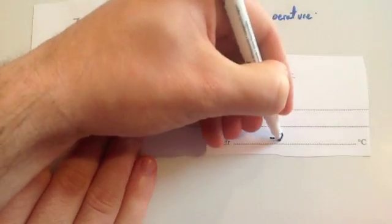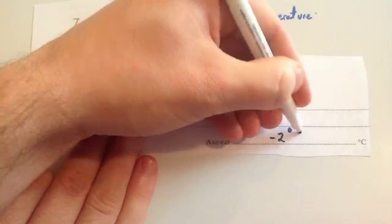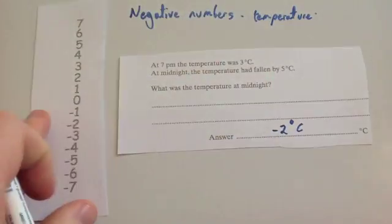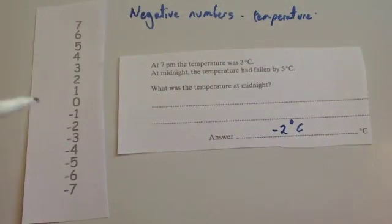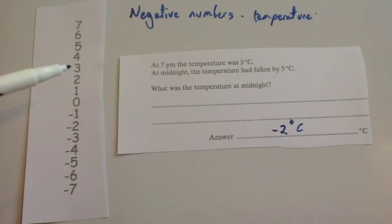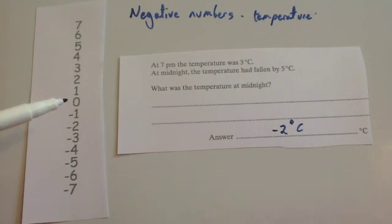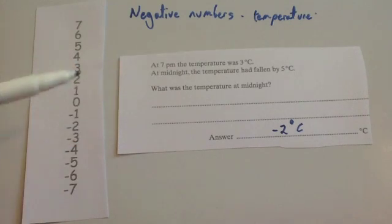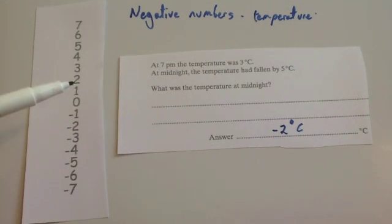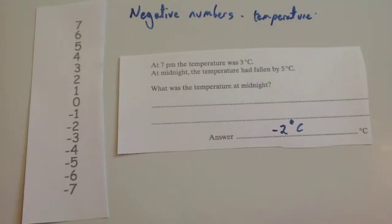So minus two degrees Celsius. Always make sure you're counting zero — some people ask should you jump zero, but you definitely count zero. So it's three degrees and we decrease it by five: one, two, three, four, five — so minus two degrees.